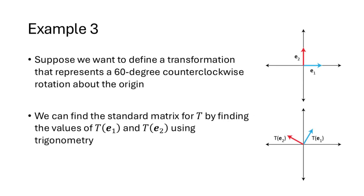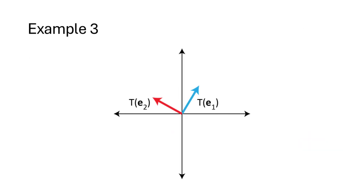Let's look at this example. Suppose we want to define a transformation representing a 60-degree counterclockwise rotation about the origin — we want to take every vector and rotate it 60 degrees counterclockwise, and find the standard matrix of that linear transformation. The theorem tells us that all we need to know is t(e1) and t(e2), and those will be the columns of the matrix.